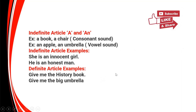You can see the examples here. Under indefinite articles, we have 'a' and 'an'. Examples: 'a book', 'a chair'. When to use 'a' and when to use 'an' — you should be very careful about the word. The word 'book' — the first syllable is 'ba', it is a consonant sound. So before consonant sounds, you will use indefinite article 'a'.